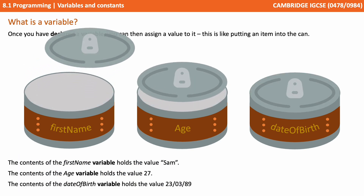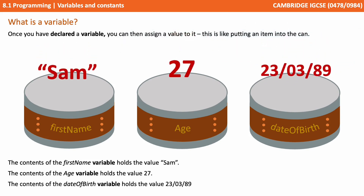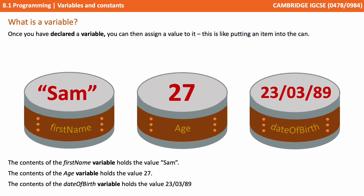Once you've declared a variable, you can then assign a value to it. This is like putting an item into the can. So the contents of the first name variable hold the value Sam, the contents of the age variable hold the value 27, and the contents of the date of birth variable hold the value 23rd of the 3rd of 89.